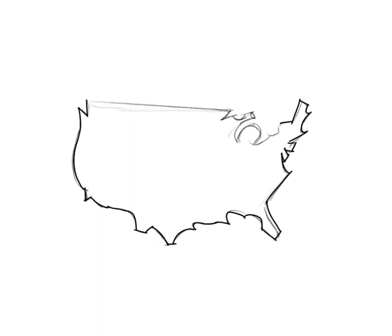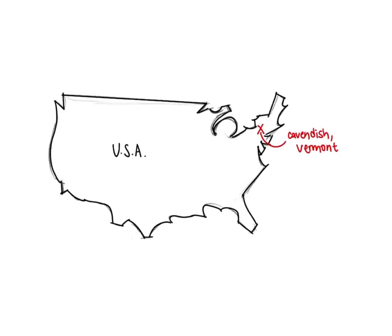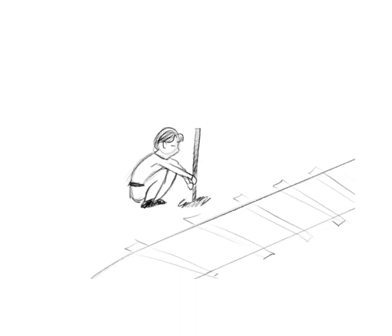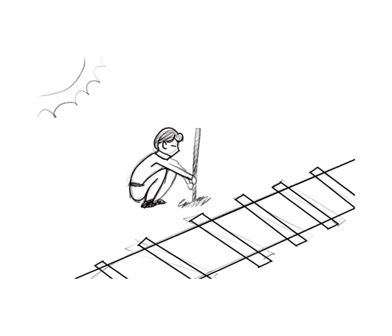On September 13, 1848, Phineas Gage was working on a railroad in Cavendish, Vermont. He was packing gunpowder into the ground with a metal rod. Unfortunately, the powder ignited which shot the rod through his left cheek and exited through the skull before landing 80 feet away.